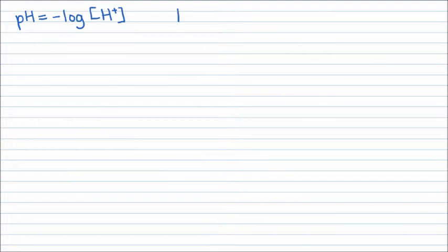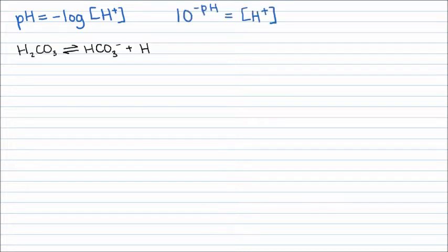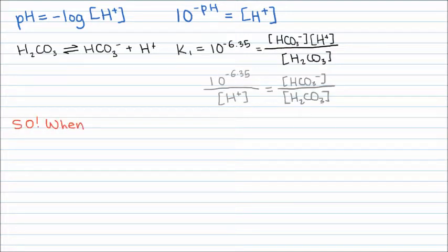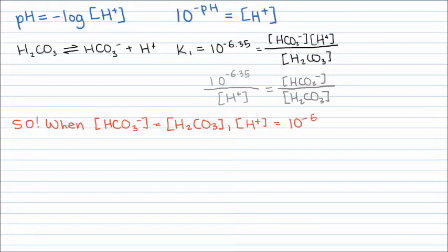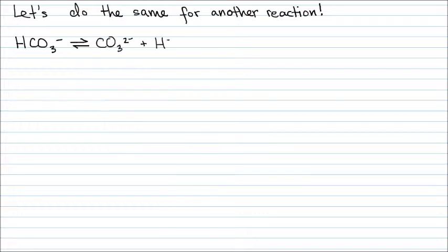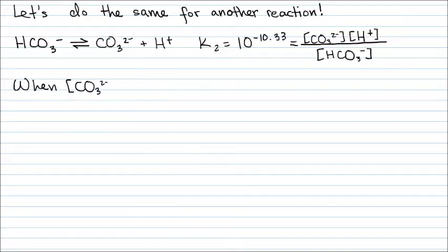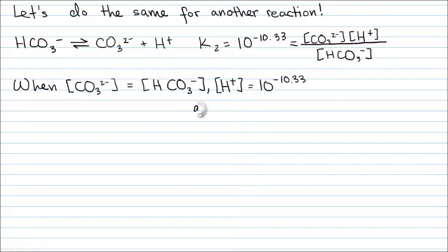Review of two important formulas, which are really the same formula rearranged. Here we have the first dissociation of carbonic acid. When the concentration of carbonic acid equals that of bicarbonate, the concentration of protons is 10 to the negative 6.35, which makes the pH 6.35 — acidic, as it is less than the neutral pH of 7. When the carbonate ion concentration equals bicarbonate ion concentration, proton concentration is 10 to the negative 10.33, and pH is a basic 10.33.